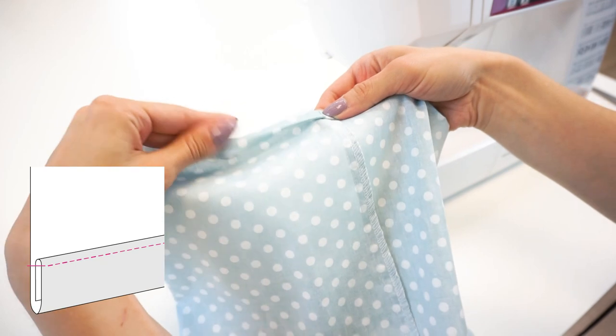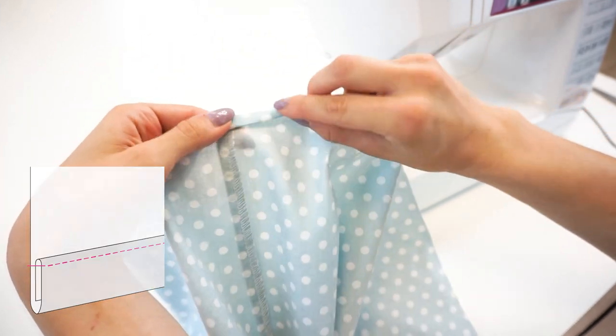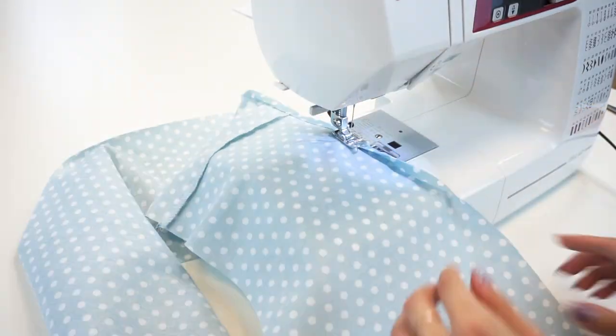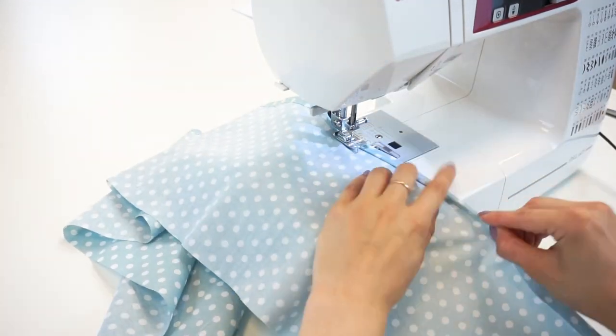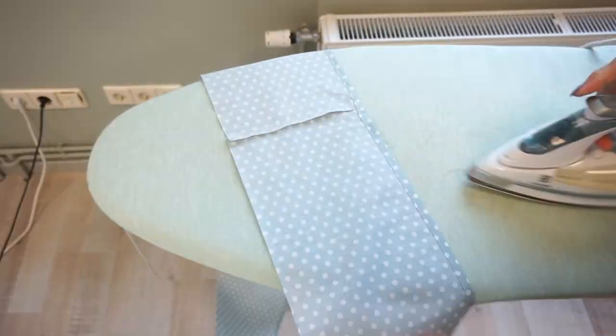Stitch along the edge. Do this step for all four frills. Now let's press the hem.